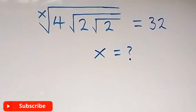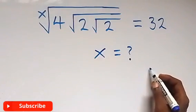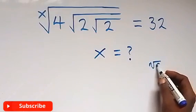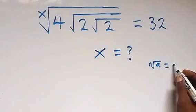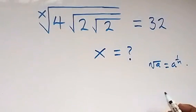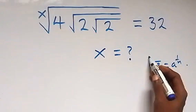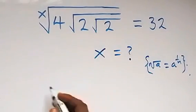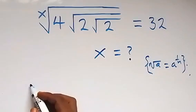Hello, you're welcome to solve for x in this night's square root problem. From what is given here, we apply the rule that when we have the nth root of a, this can be written as a raised to power 1 over n. So when we use this here, what we have can be written as four...